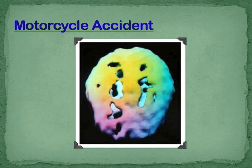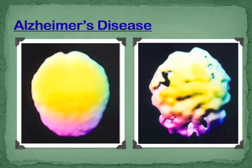This is a motorcycle accident with some trauma, and you see some injury to the brain. This is Alzheimer's disease — there's a normal brain here, and there are some holes and deficits with Alzheimer's. It's a very terrible disease.